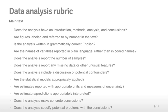To give you an idea about how you'll be scoring the data analysis, I've listed the questions here. Remember that the categories of values for each question from 0-5 will be explained in the rubric when the peer analyses become available. Here's an example of some of the questions that you'll be asked. For the main text, you'll be asked, does the analysis have an introduction, a methods, analysis and conclusion section? Are figures labeled and referred to by number in the text? Is the analysis written in grammatically correct English? Are the names of variables reported in plain language rather than in coded names? Does the analysis report the number of samples?